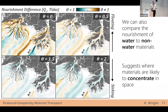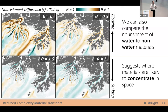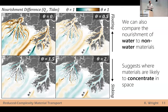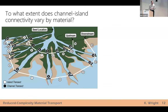We can also look at how nourishment changes relative to what we'd expect for water, for a given environmental condition when we change the theta parameter. Each of these four maps takes the difference between the nourishment of water and the nourishment of this other material. Places shown in brown show a relative enrichment of that material — think of this like a concentration: higher concentration relative to what's entering the delta upstream. Places in blue show lower concentration, indicating where we expect more or less of these materials in the delta.